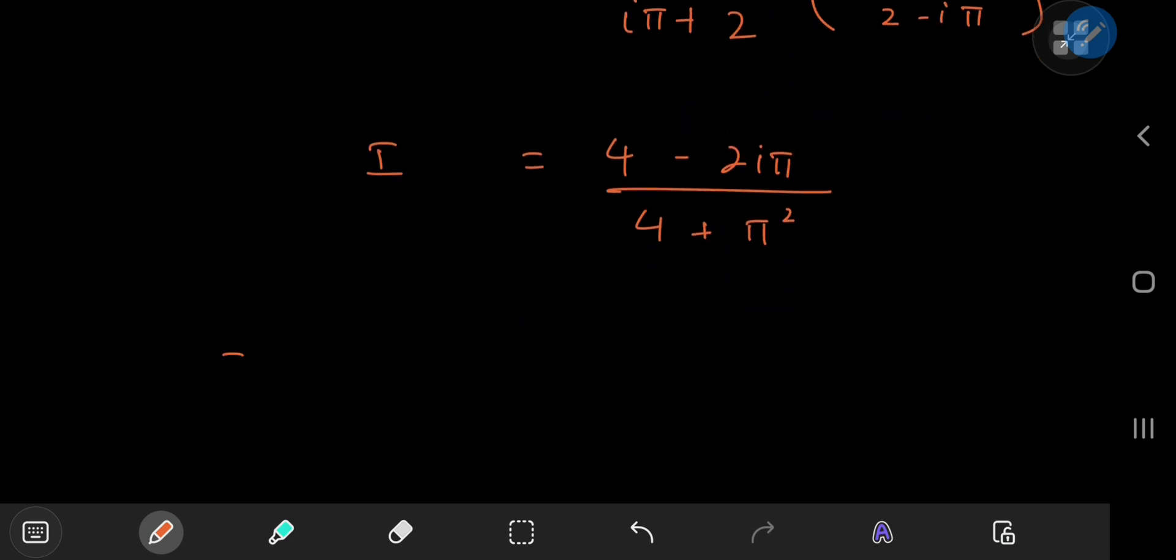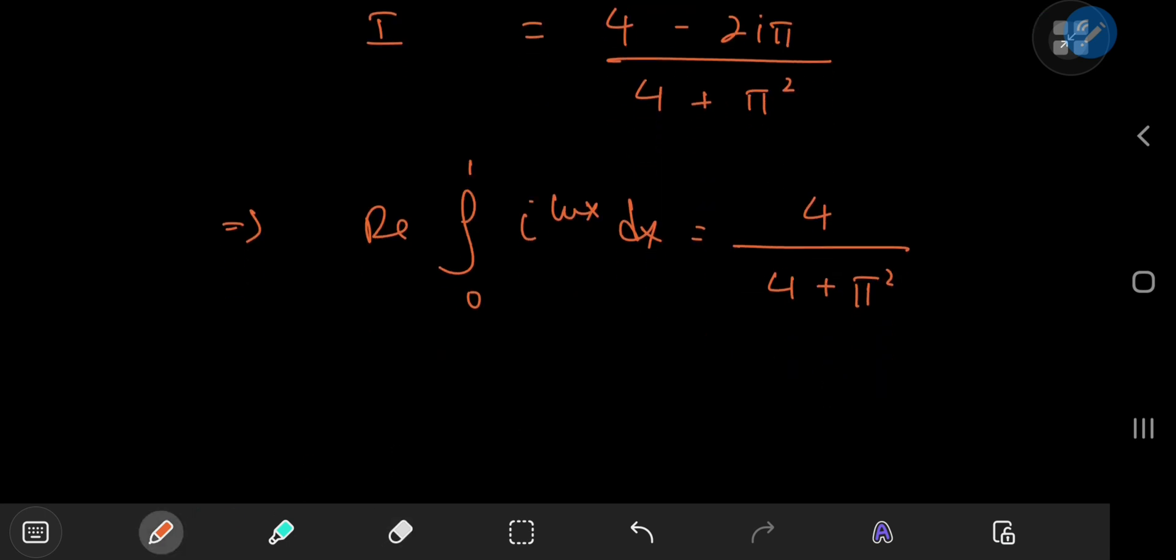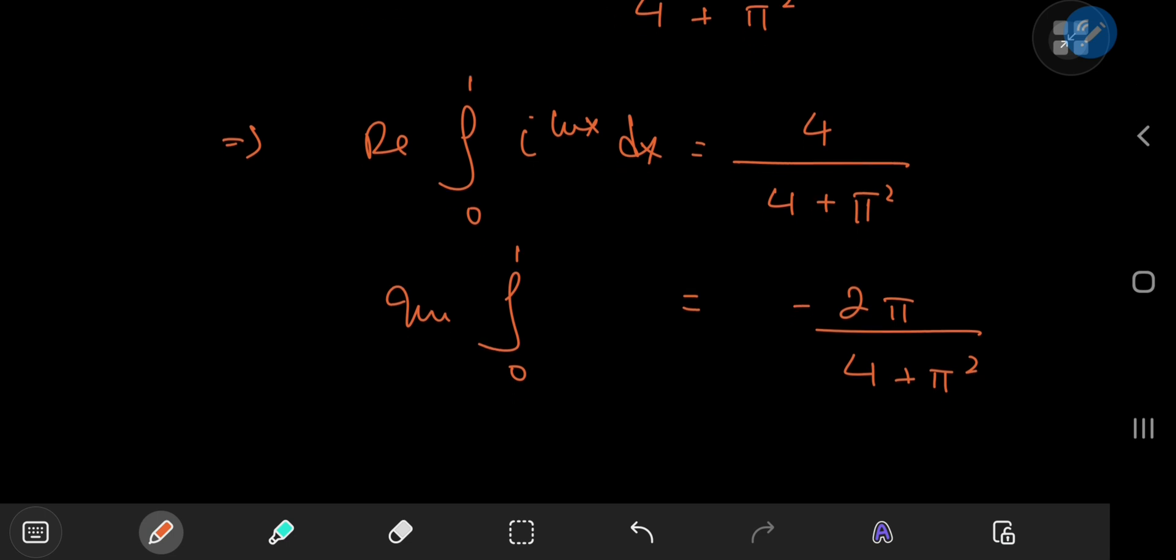Okay cool. So that means the real part of the integral from 0 to 1 of i to the log x dx equals 4 divided by 4 plus pi squared. Again pretty nice in terms of looks and the imaginary part of the exact same integral equals negative 2 pi divided by 4 plus pi squared which again looks even better than the real part.